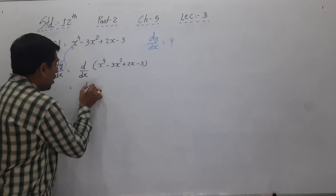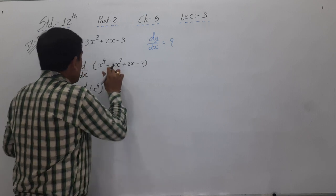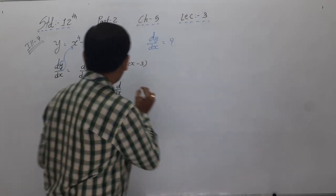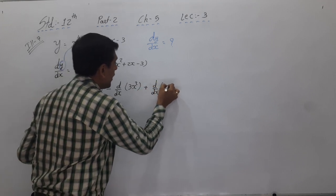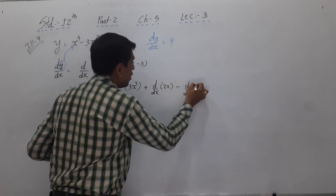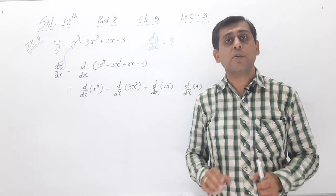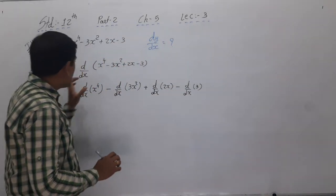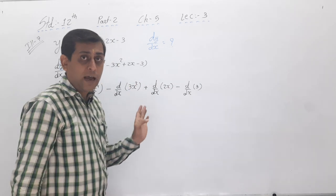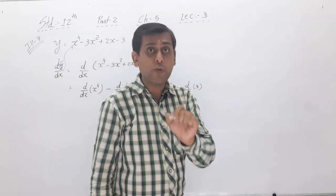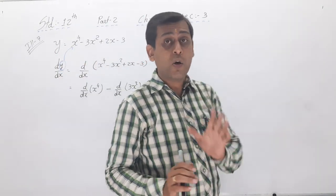This step is compulsory to write because it is a 2-mark sum. Even though you can get the answer in one step from the formula, we need all steps to get full marks. For x⁴, there is no multiplier so we write d/dx(x⁴) as is. But here, 3 is the multiplier of x². We want the differentiation of x, not 3. So we separate 3: write 3 · d/dx(x²). Similarly, 2 is multiplier of x: write 2 · d/dx(x). And for the constant 3, no x is there, so write d/dx(3) as is.